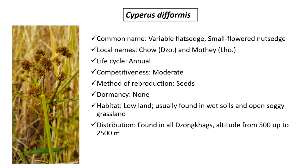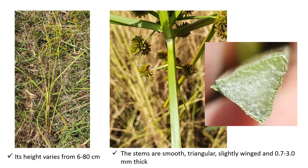Cyperus diaphragmis is commonly known as variable flat sedge or small-flowered nutsedge. Local names are Tso in Dzongkha and Mothe in Nepali. It is an annual plant with moderate competitiveness. Reproduction is by seeds with no dormancy. It is found in lowland areas, usually in wet soils and open soggy grassland. It is found in all Dzongkhags, at altitudes ranging from 500 to 2500 m above sea level. Its height varies from 6 to 80 cm. The stems are smooth, triangular, slightly winged and 0.7 to 3 mm thick.